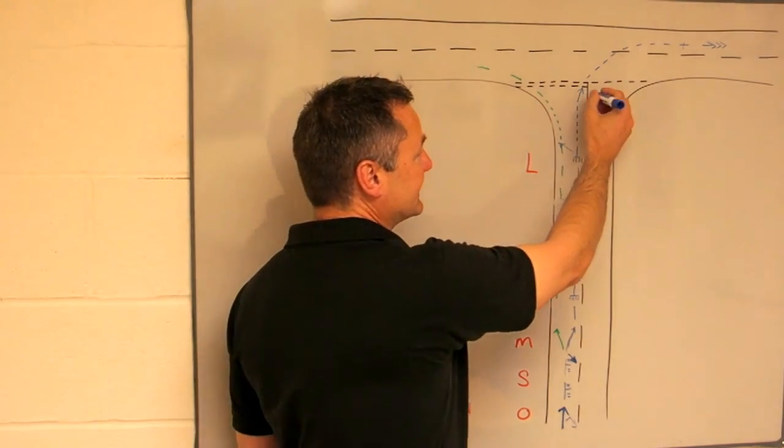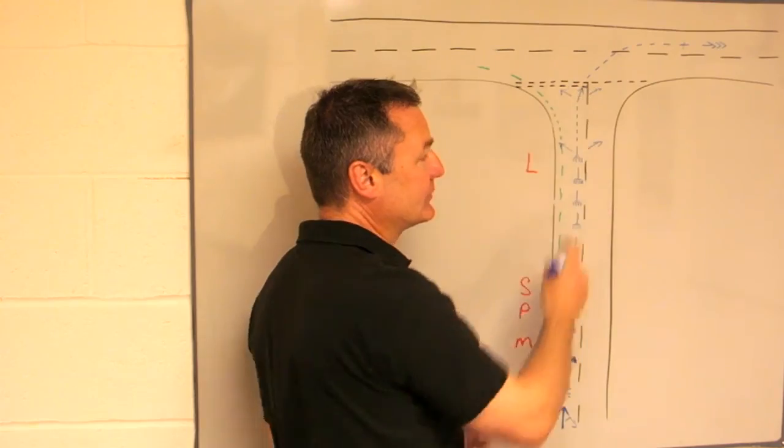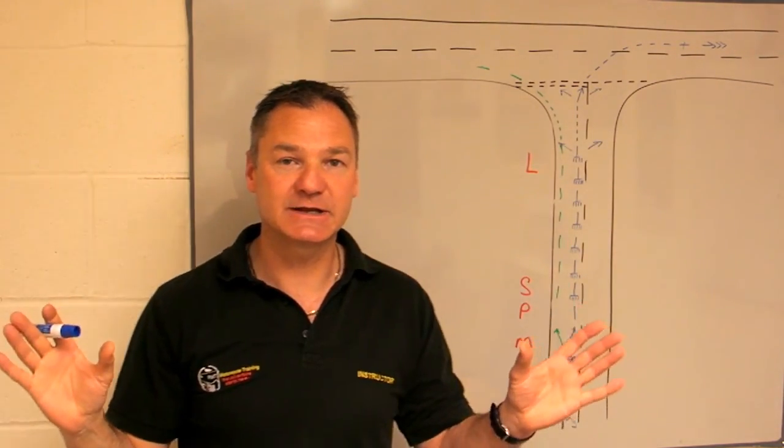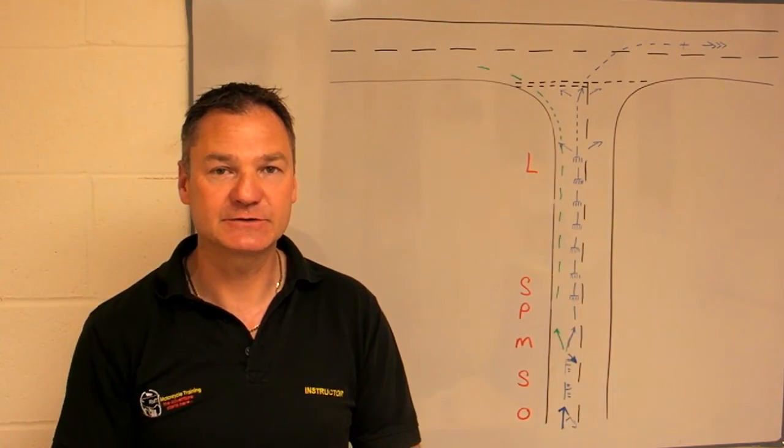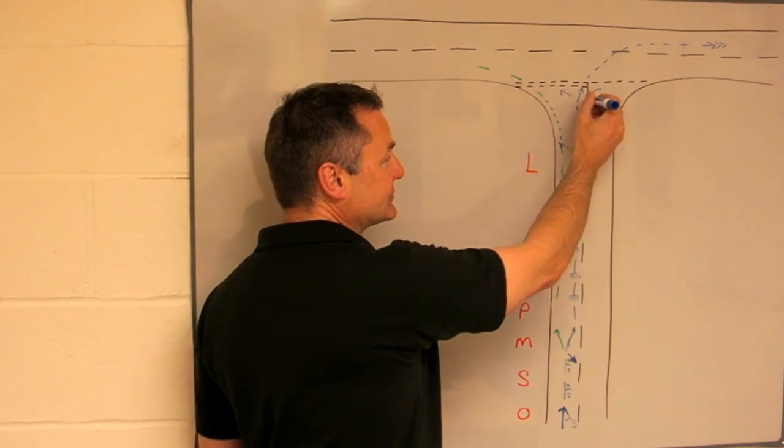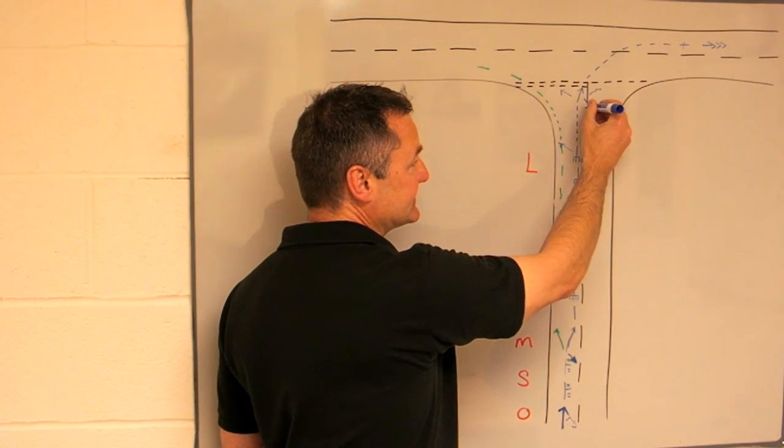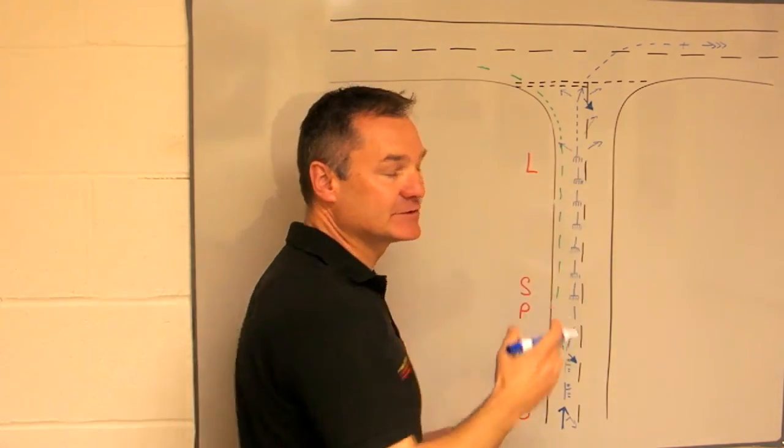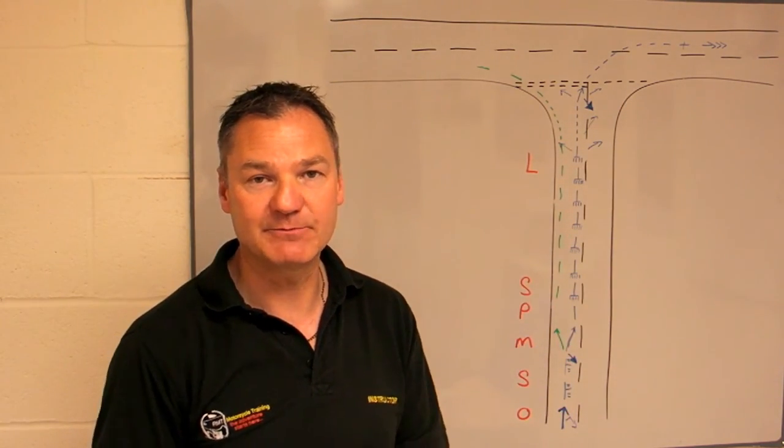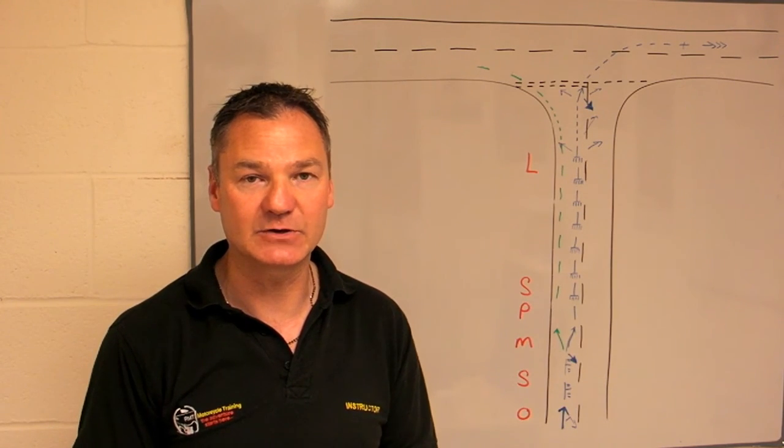Once we've stopped, we can look into the junction both ways and we'll check that it's clear. If we stop for any length of time, we need a lifesaver over the right shoulder. This just informs us that it's safe and there's nobody trying to overtake us because they're impatient or they want to get going a little bit quicker than us.